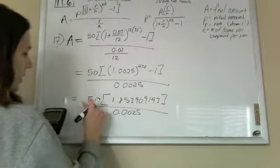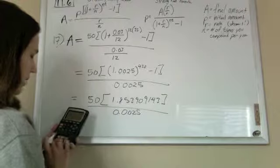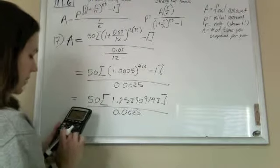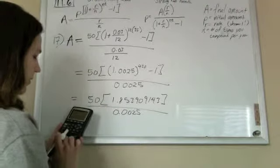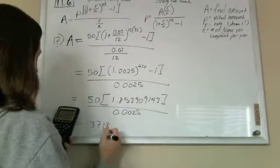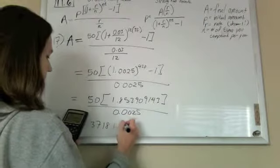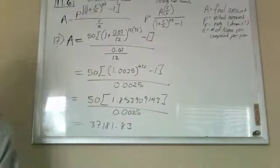I'm just going to do 50 times 1.85909143 divided by 0.0025. The calculator shouldn't have any trouble with that order of operations, and you should get 37181.83 rounded. So let's check that.